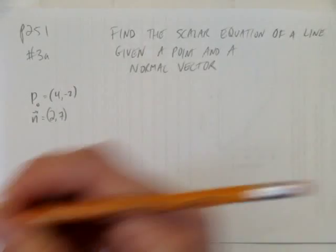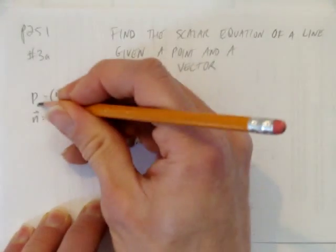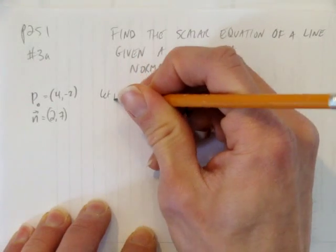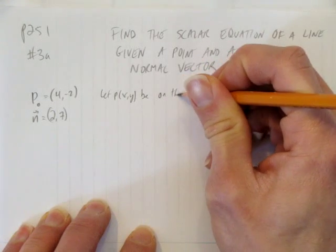So the first thing we'll want to do is create another point. This was P₀, so we'll just say, let P(x, y) be on the line, or be a point on the line.